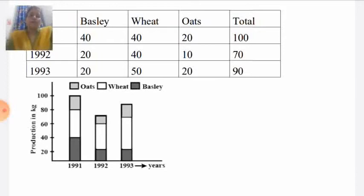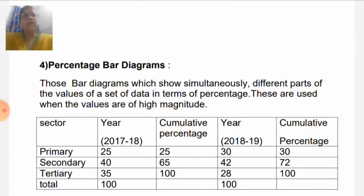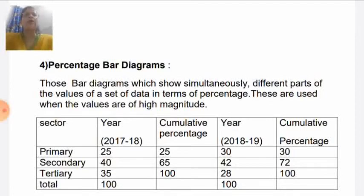We should show a suitable index indicating which color we use for each component. Next is the percentage bar diagram. In a percentage bar diagram, we simultaneously show the different parts of a set of data in terms of percentage. If we are given values, we first change those values into percentages by dividing the given value by the total and multiplying by 100. The percentage bar diagram is useful when the magnitude of items is very large.